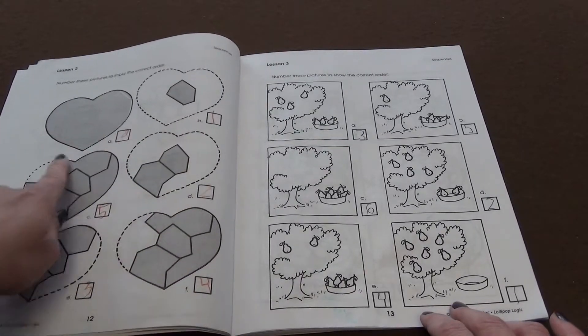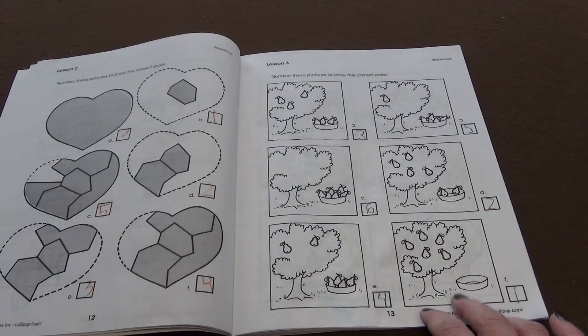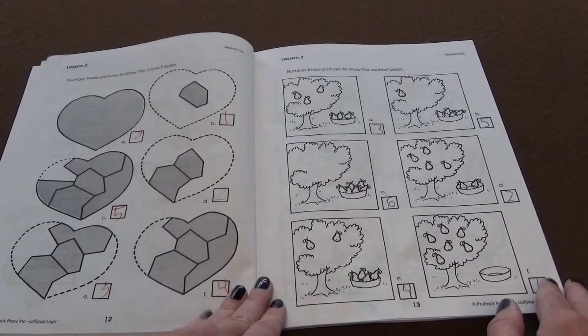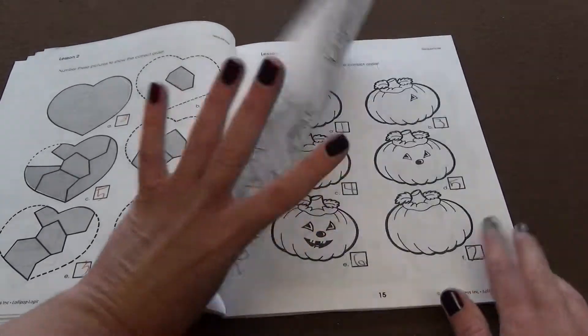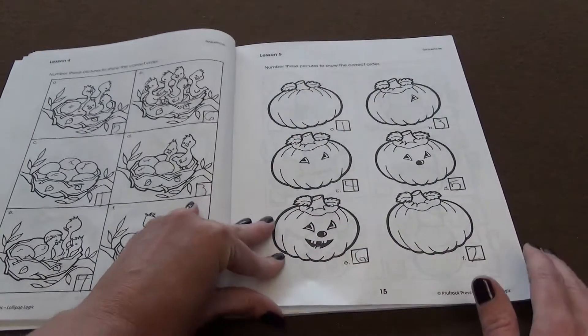And so you would just look at these for sequences and you're going to put in what happened first, second, third, fourth, fifth, sixth. And so these are all for the sequences. More sequences.